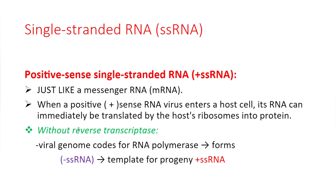For viruses without reverse transcriptase: the viral genome codes for RNA polymerase, which forms a negative sense single-stranded RNA. This negative sense strand then serves as a template for the progeny positive sense single-stranded RNA, which becomes the genome of the new virus.